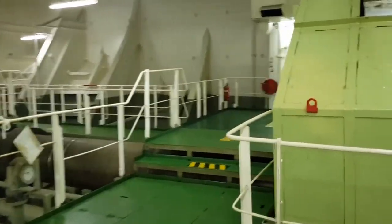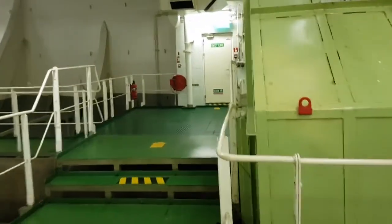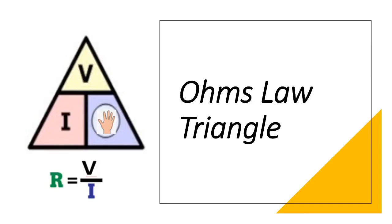Let's get started. The first part of the topic is Ohm's Law triangle. The relationship between voltage, current, and resistance in any DC electrical circuit was first discovered by German physicist George Simon Ohm.